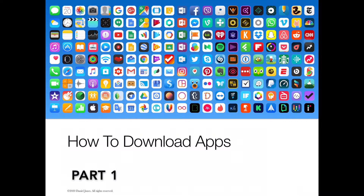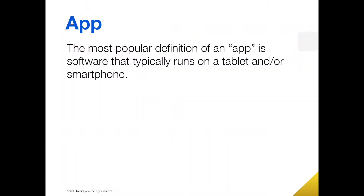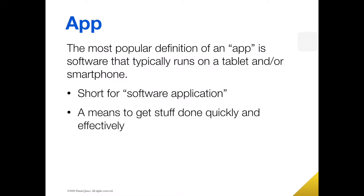Today we're going to talk about how to download apps. But before I get into the step-by-step process, I want to talk about what an app is and define that. So an app is software, and the term app is just short for software application. Apps are typically run on a tablet device or a smartphone, and they're a way of getting things done quickly, effectively, and very inexpensively.